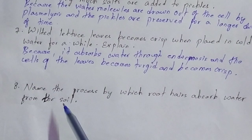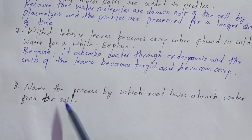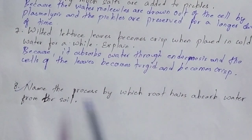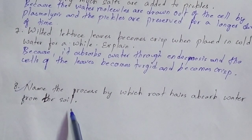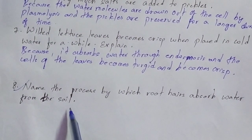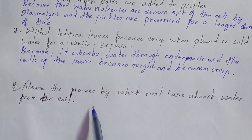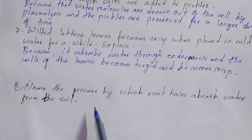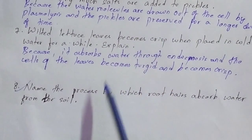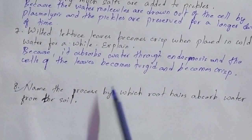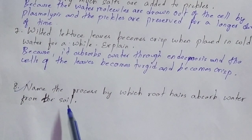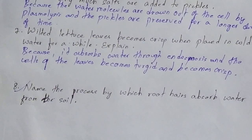Moving on to the next and last question, which is very important and was asked in the year 2017 in your board examination. The question is: name the process by which root hairs absorb water from the soil. You are going to write this answer in the comment section and we will get back to you. Friends, that's all for today. If you have any doubts or queries related to your board examinations, write to us in the comment section. Do not forget to answer question number eight in the comments. Thanks for watching, please give a thumbs up and subscribe to our channel Mastermind. Thank you.